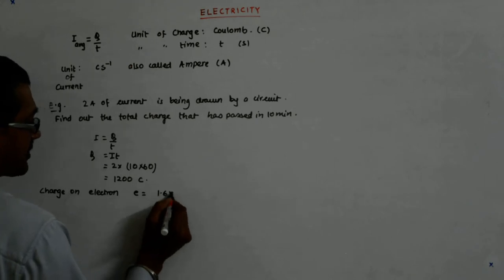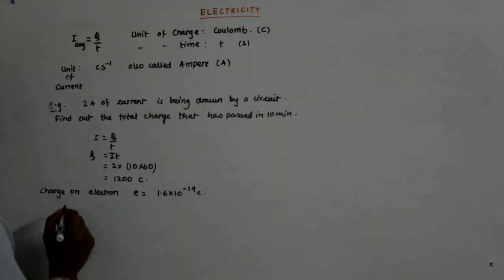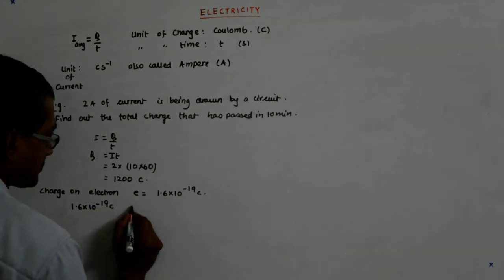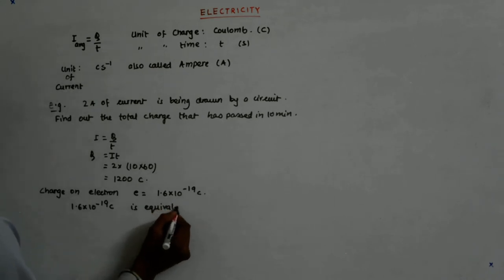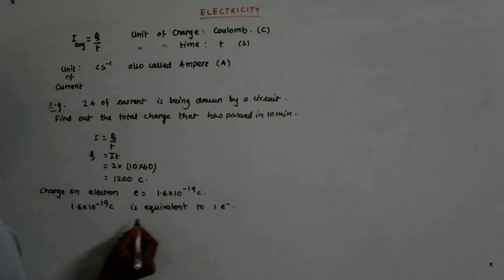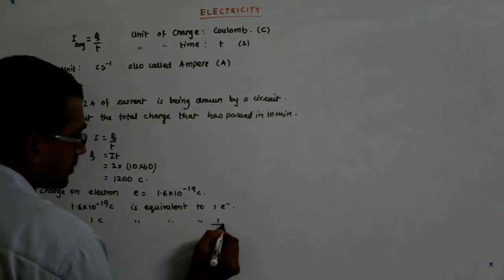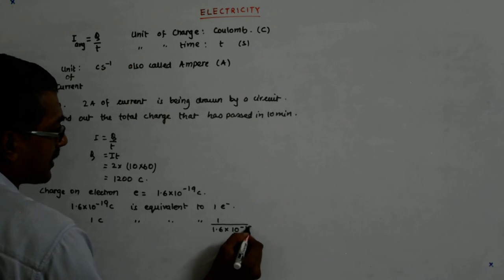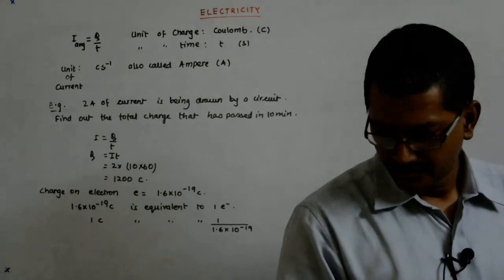Charge on an electron is denoted by e, that is 1.6 into 10 to the power minus 19 coulombs. Now 1.6 into 10 to the power minus 19 coulombs, 1 coulomb is equivalent to 1 divided by 1.6 into 10 to the power minus 19 electrons. If I calculate it, if I use the calculator, what do we get?